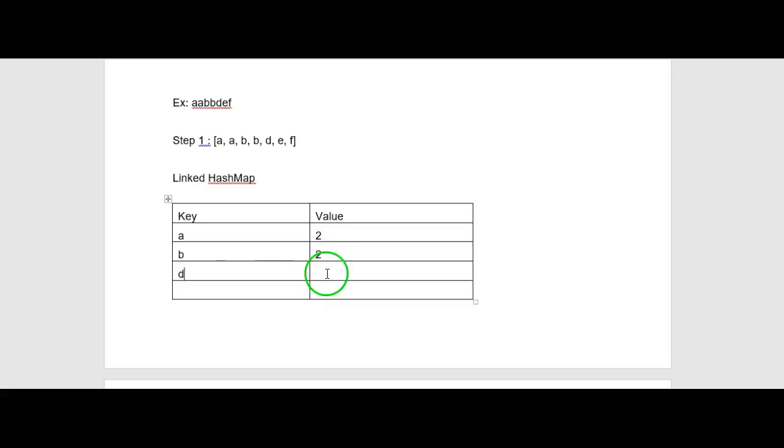I'll create a new LinkedHashMap — initially it will be empty. The key will be the character and the value will be the count, that is, the number of occurrences. So for 'a' I will store a count of 2, for 'b' a count of 2, and for 'd' a count of 1. LinkedHashMap maintains insertion order, so we can retrieve values in the order they were inserted.